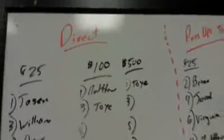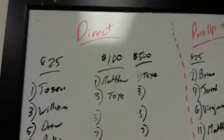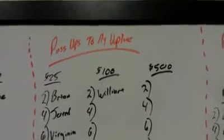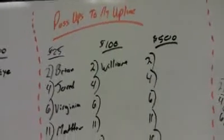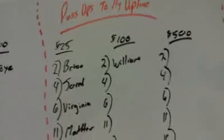Your entire business is broken into three categories. The first category is direct — these are the people that I've personally enrolled in Empower Network. Then you have pass-ups to your sponsor or to your upline, because pass-ups could actually go beyond your sponsor and go above your sponsor. So I just put upline.